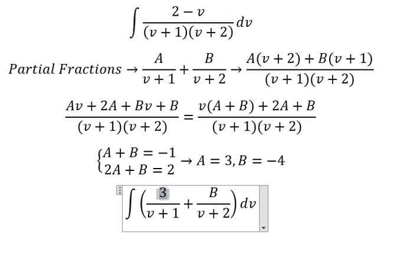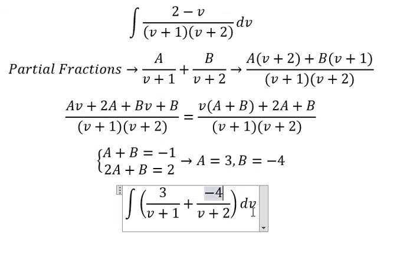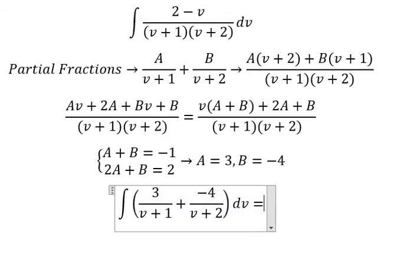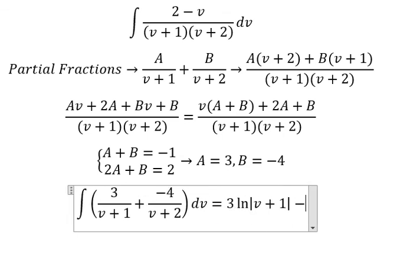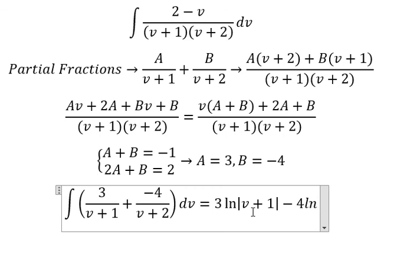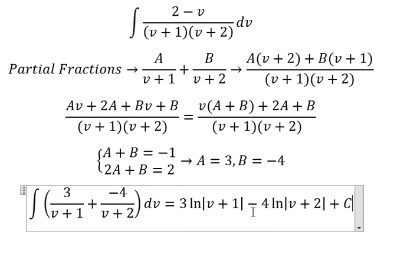A is about number 3, B is about negative number 4. The integration of this one, we have 3 ln of the absolute value of v plus 1, minus number 4 ln of the absolute value of v plus 2, and we put about c.